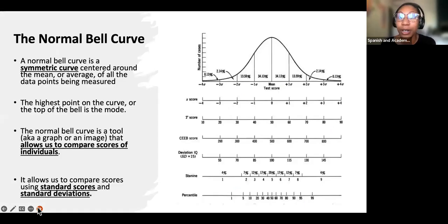So the normal bell curve, which is also known as the normal distribution, is a symmetrical curve centered around the mean or the average of all the data points being measured. The highest point on the curve or the bell shape that you see is called the mode. In a normal distribution, the mean, median, and mode, also known as the measures of central tendency, all line up in the middle.